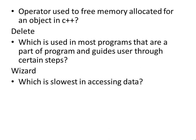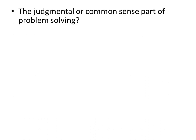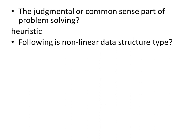Which is slowest in accessing data? Magnetic disk. Range of frequency for data transmission is called bandwidth. The judgmental or common sense part of problem solving is called Heuristic. Which of the following is a non-linear data structure type? Tree and Graph.